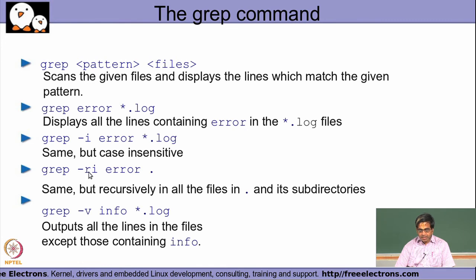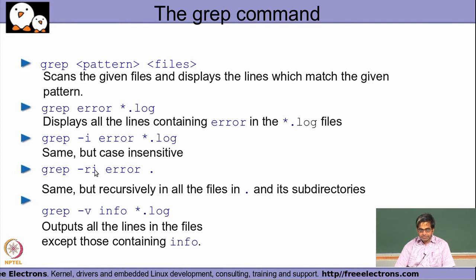The `-r` option makes `grep` search recursively — using `.` (current directory), all files will be checked recursively for the pattern, and combined with `-i` it becomes case-insensitive recursive search. The `-v` option reverses the behavior: instead of displaying lines that contain the pattern, it displays all lines that do not contain the pattern.